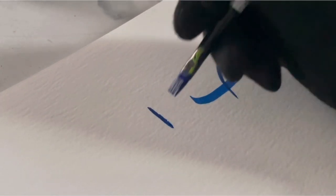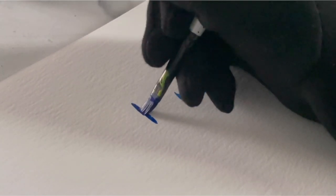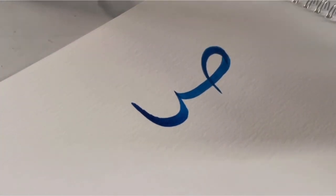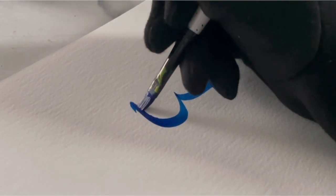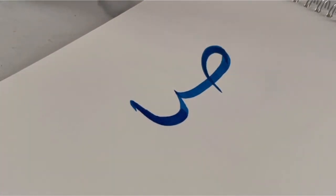So again, starting off with a light hand and as I reach the bottom of the curve, pushing down to get a thicker edge, and then lifting up with a light hand again. Now I'm just going to go over this line. I created a slight little curve at the top because this curve will join into the final letter.